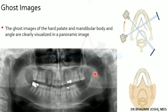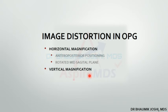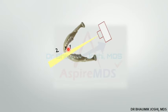Now let's see image distortions in OPG. Image distortion can be in the horizontal direction — horizontal magnification or minification — or vertical magnification. Horizontal magnification or minification, meaning increase or decrease in size in the horizontal direction, can be due to two reasons: either anterior-posterior positioning of the mandible, or a rotated mid-sagittal plane.